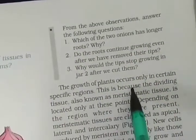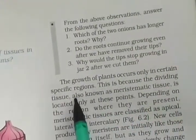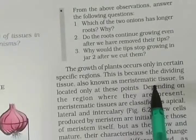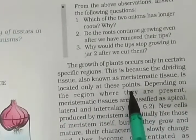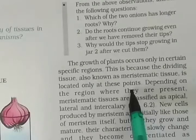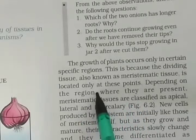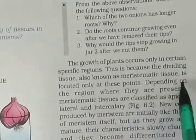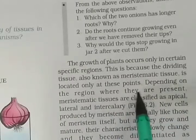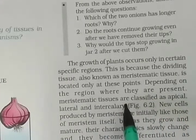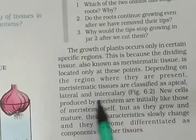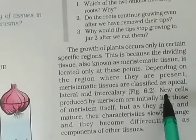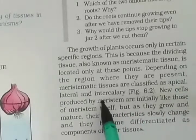The growth of plants occurs only in certain specific regions because the dividing tissue, known as meristematic tissue, is located only at these points. Depending on the region where they are present, meristematic tissues are classified as apical, lateral, or intercalary.